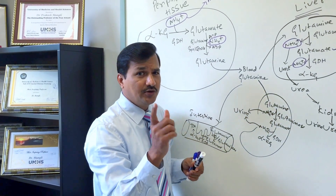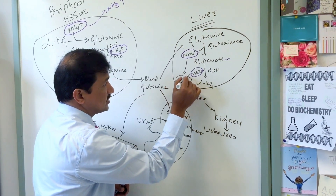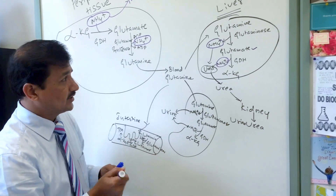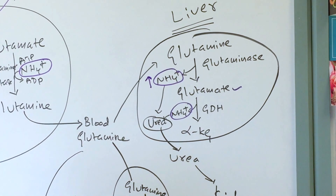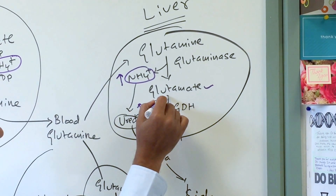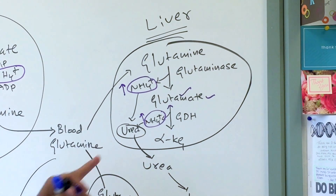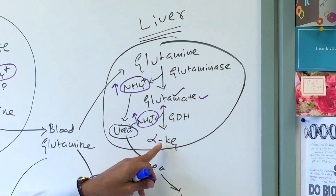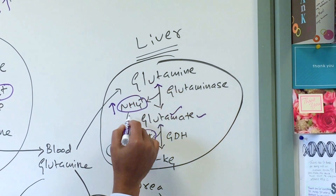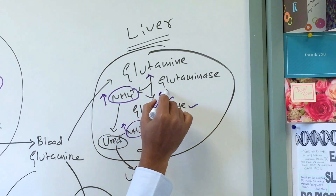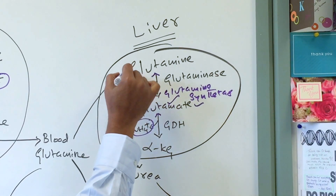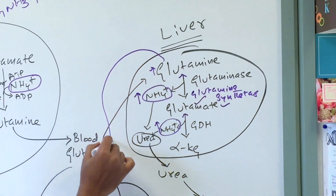Sometimes when the urea cycle becomes saturated in the liver, ammonium ion accumulates. At this point, reversal of reactions occurs: alpha-ketoglutarate fixes the ammonium ion to make glutamate (via glutamate dehydrogenase), and glutamate is then converted to glutamine by fixing one more ammonium ion via glutamine synthetase. This glutamine is released back into the bloodstream and taken up by the kidney.